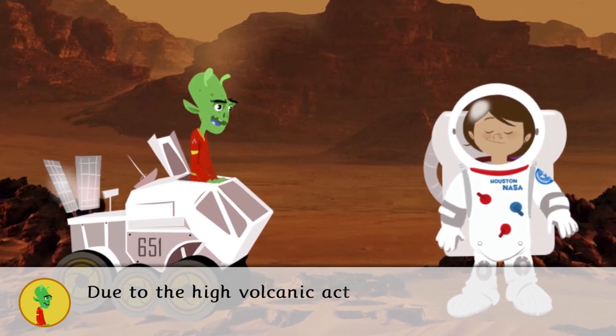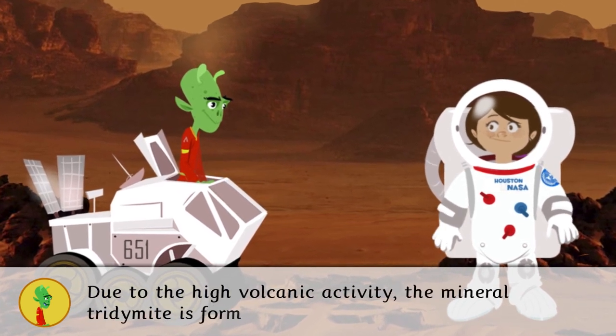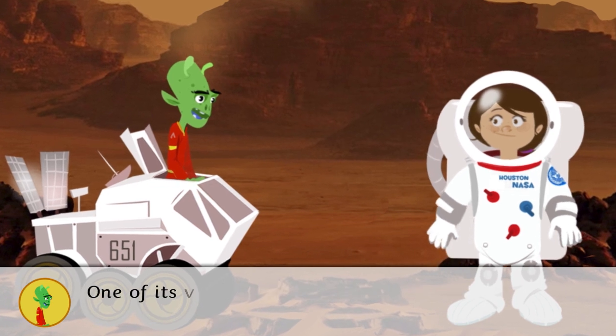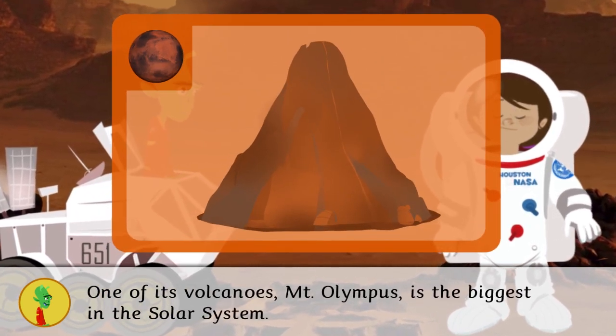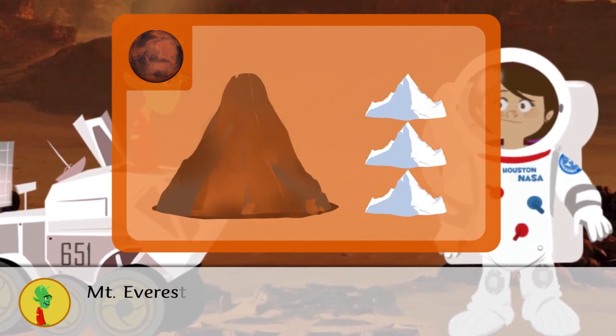Due to the high volcanic activity, the mineral tritimite is formed. One of its volcanoes, Mount Olympus, is the biggest in the solar system. It is three times taller than Mount Everest.